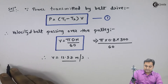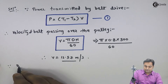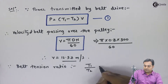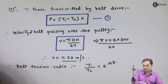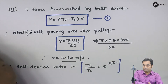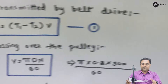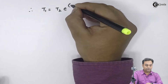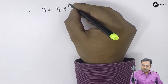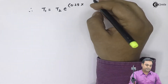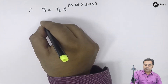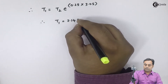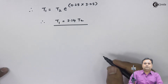After getting the velocity, I will use the belt tension ratio formula. Since belt tension ratio is t1/t2 = e^(μθ), substituting mu = 0.25 and theta = 3.05, we get t1 = t2 × e^(0.25 × 3.05), which gives t1 = 2.14 × t2.